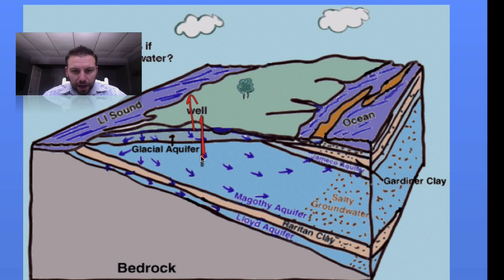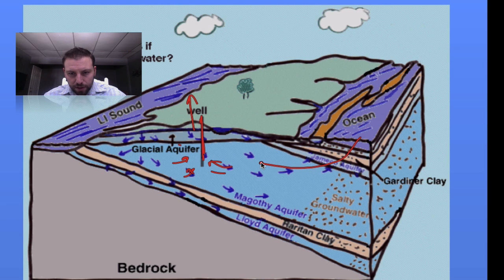If we pump groundwater from Long Island — here we have a well — the water comes out and you notice there's a little bit of disruption of the groundwater flow. If we continue to pump, it'll actually move inward like this, where we could potentially pull in salt water.